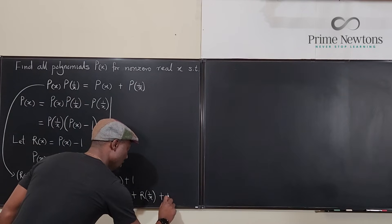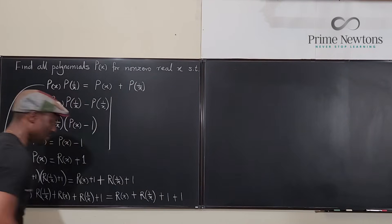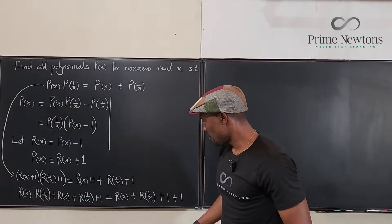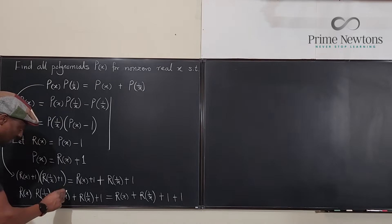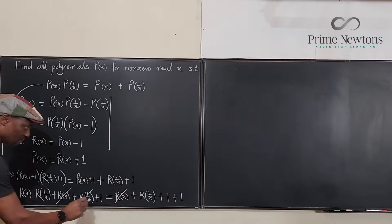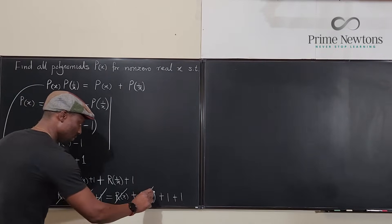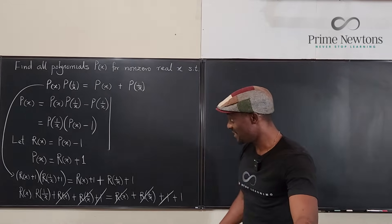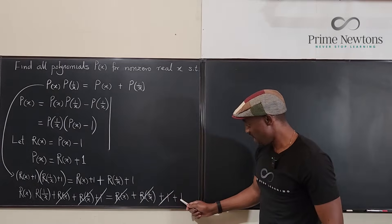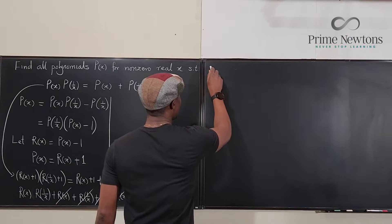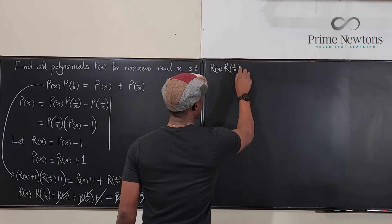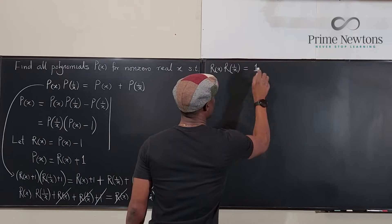Now let's cancel terms on either side. R(x) cancels with R(x), R(1/x) cancels with R(1/x), and the 1 on the left cancels with one of the 1's on the right. The only thing remaining on the left is the product R(x)·R(1/x), and the only thing remaining on the right is 1. So R(x)·R(1/x) = 1.